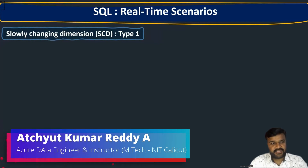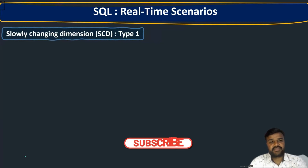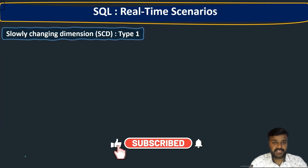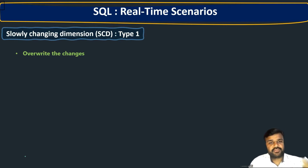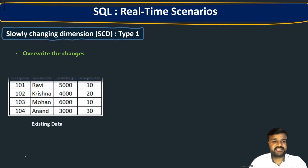Let us try to understand first what SCD Type 1 is, and then how we are going to implement it in SQL. The meaning is: first of all, overwrite the changes. If a value already exists in the current table, you are going to overwrite it. If it is new data, you insert it. Let us understand this with a simple example.